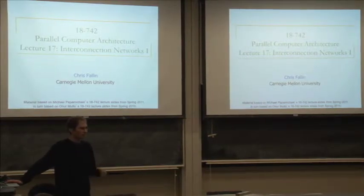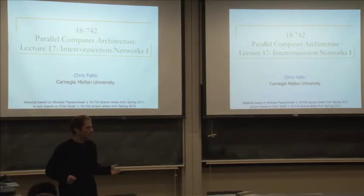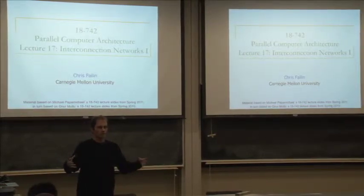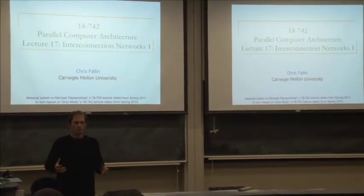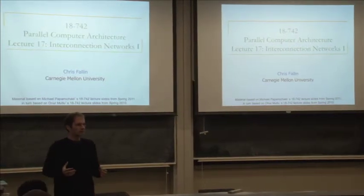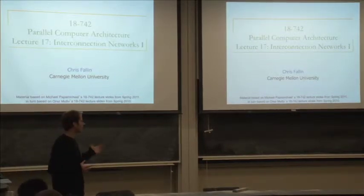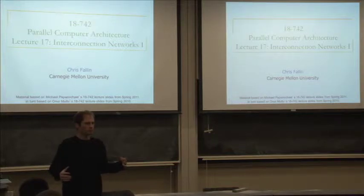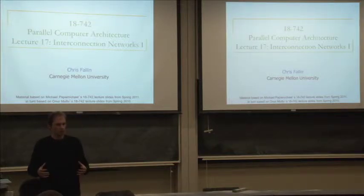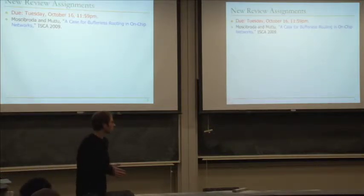So, interconnection networks. You guys have talked about parallel systems in general so far. The idea of an interconnection network is when you have a system that gets large enough — you have multiple processors, multiple memory nodes, maybe multiple pieces of cache — and they all need to connect together and communicate in a scalable way. That's in general what an interconnection network allows us to do: connect different elements of the system so they can pass messages back and forth. We'll talk about how they're built today. Before I get into that, there are a few announcements from the course staff.